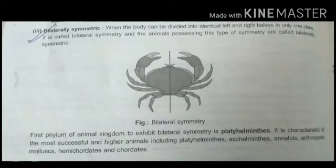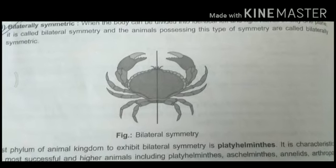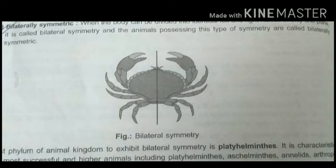Third is bilaterally symmetric. When the body can be divided into identical left and right halves in only one plane, it is called bilaterally symmetric. The first phylum of the animal kingdom to exhibit bilateral symmetry is Platyhelminthes. It is characteristic of the most successful and higher animals including Platyhelminthes, Aschelminthes, Annelida, Arthropoda, Mollusca, and Chordates. In the picture we see the central axis and the species is divided into left part and right part.